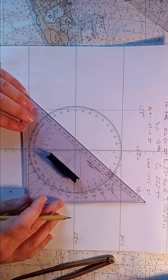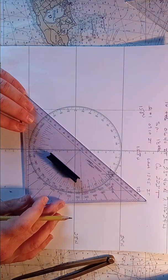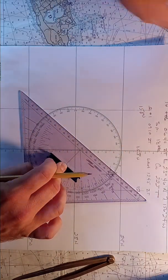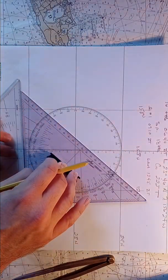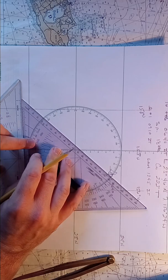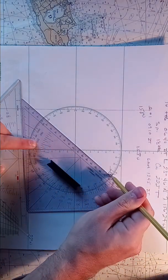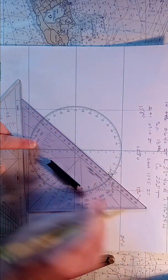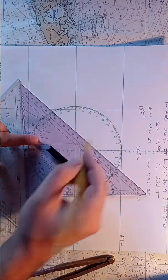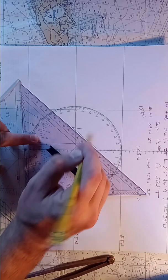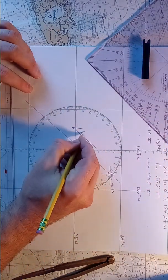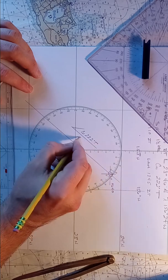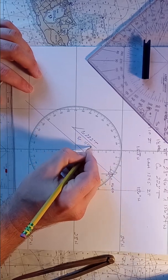Measure out 222 degrees. You can either use your triangle or the circle. Slide it over, lay down your pencil, lay down the track. Label however you like to label. Course 222 degrees true, speed 18 knots.